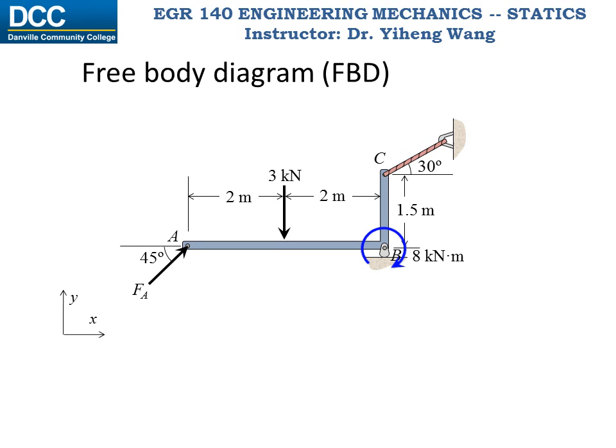The rocker at point B allows horizontal motion and rotation, and even allows the member to move upward. The only motion it does not allow is downward motion, so it exerts a vertical upward force. The cable at point C allows all motions except when the member tries to move away; therefore the cable force is a tension force that pulls the member. Keep in mind that a cable support always exerts a tension force. Now the free body diagram is complete with three unknowns: FA, FB, and TC. We write three equilibrium equations and solve for all of them.